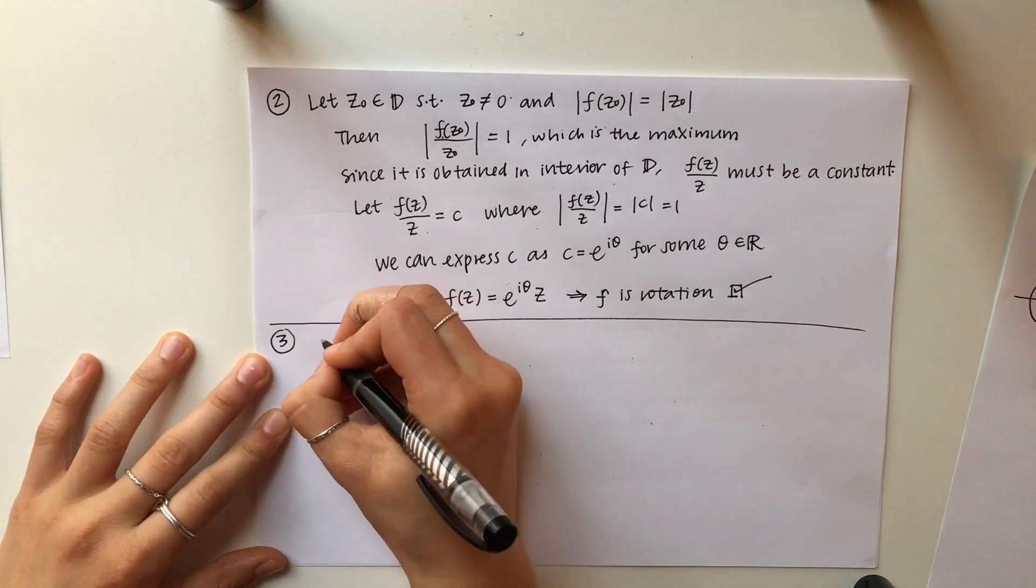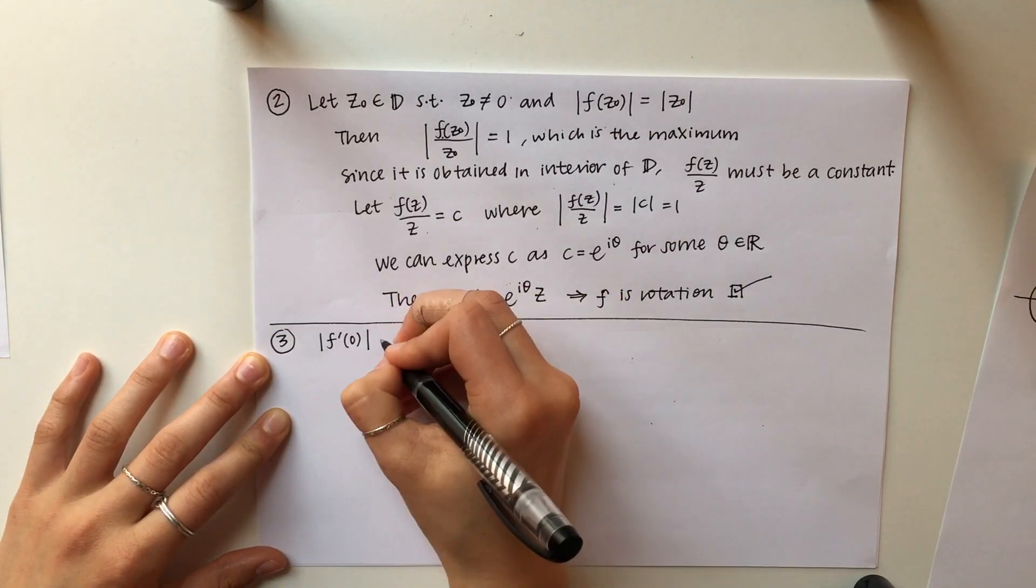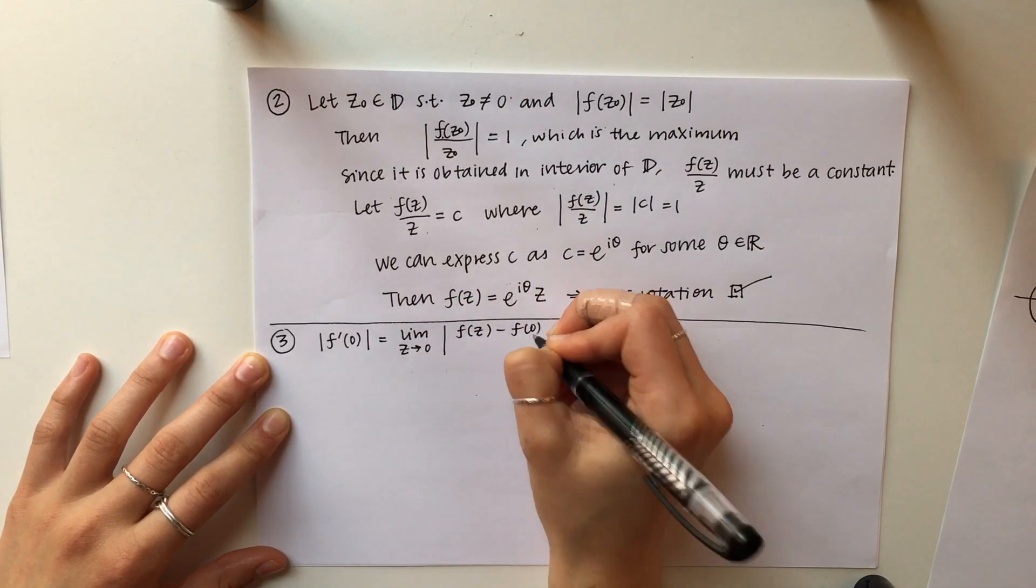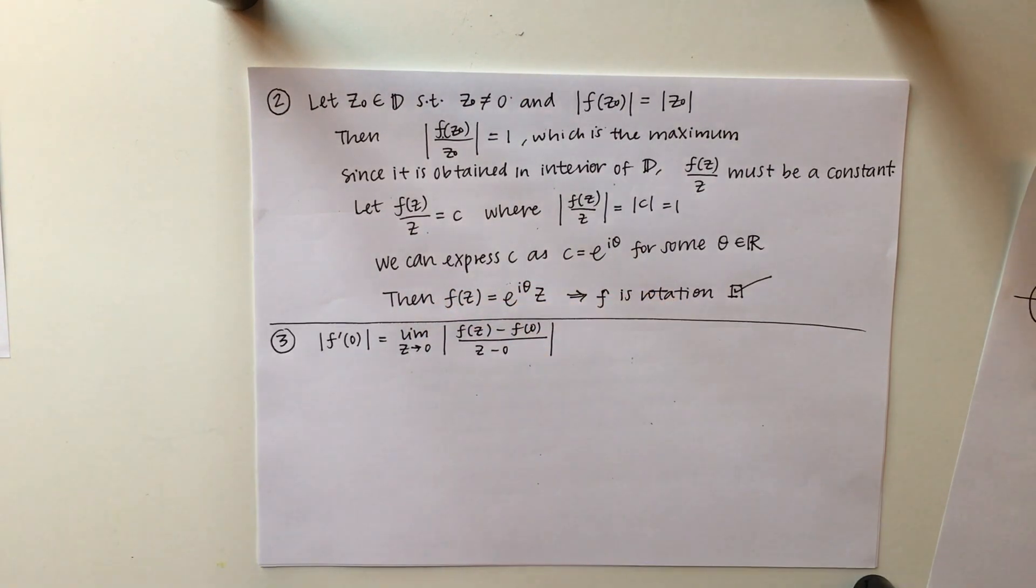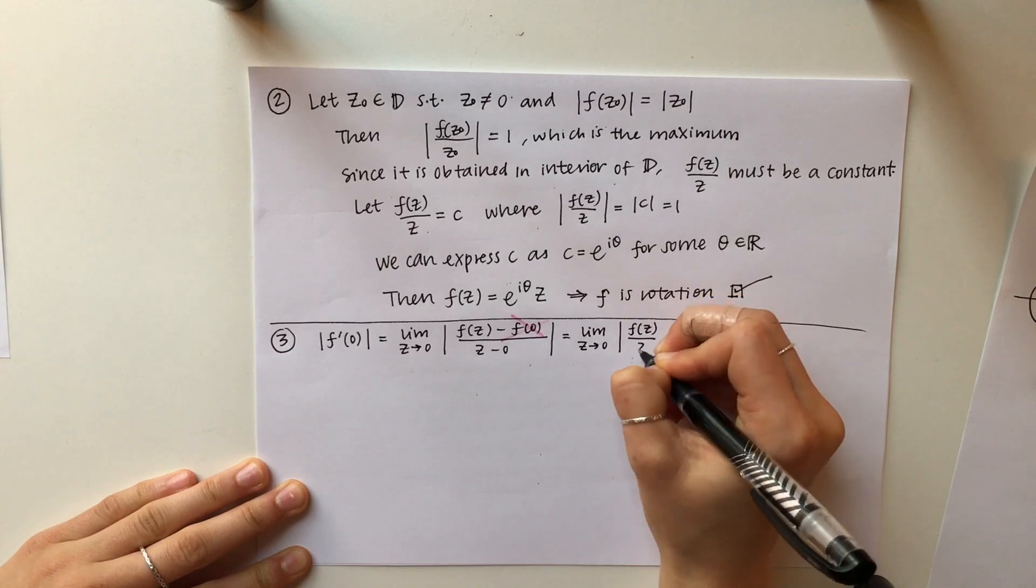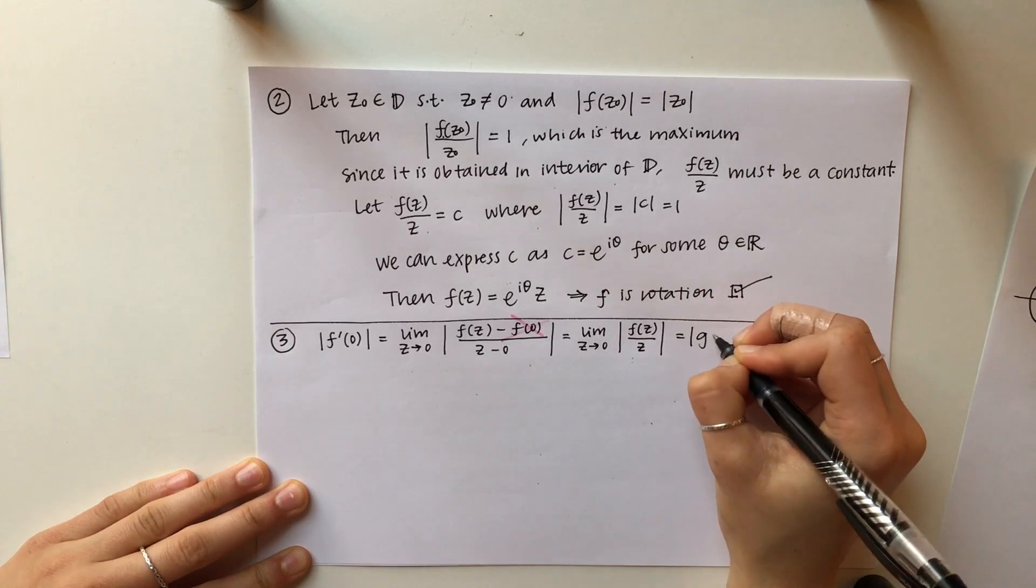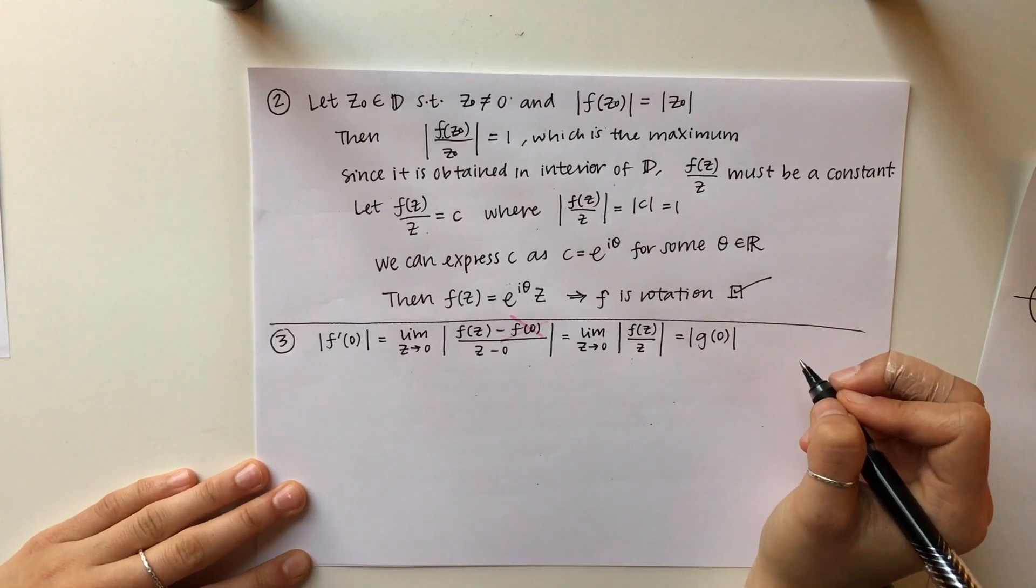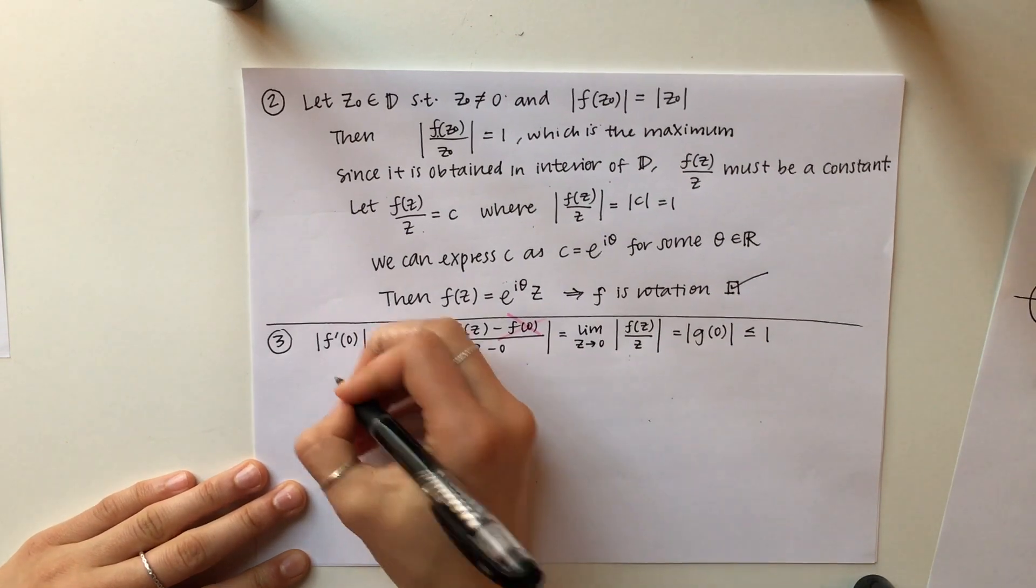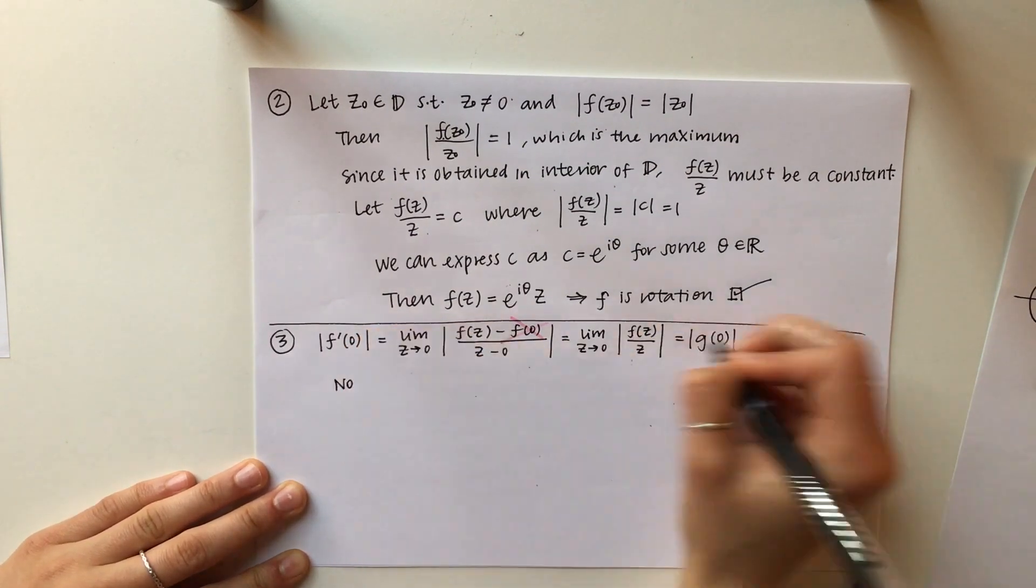Now for the last part of our proof, we want to show that the modulus of the derivative of F at 0 is equal to 1. So we'll plug in the definition, and we know that F of 0 equals 0, so we can ignore that part, and we end up with the limit as Z approaches 0 of F of Z over Z, which is really just the function G defined at 0. And we know it has to be bounded by 1 because we are working inside the unit disk.